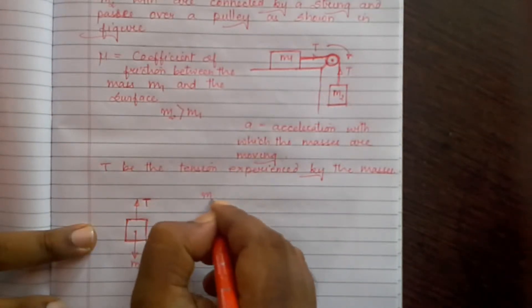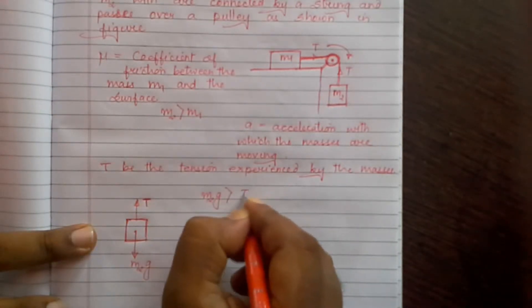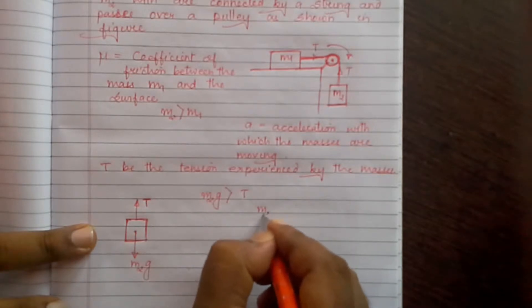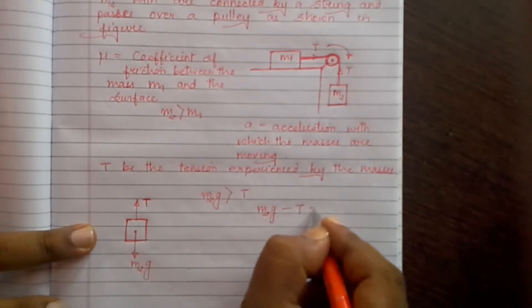Or M2g minus T is equal to M2a. Let us call this equation 1.